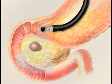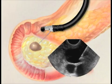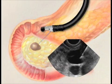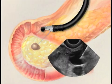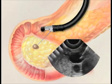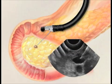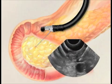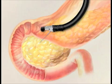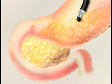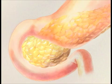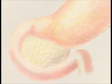A very fine needle is passed through the wall of the stomach or duodenum and into the cyst, and suspicious areas can be sampled. Cyst fluid is then sent for further tests. Endoscopic ultrasound provides very detailed information about both pancreatic cysts and the pancreas itself, which helps doctors determine the optimal management and treatment.